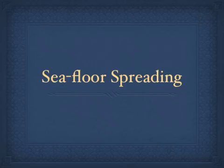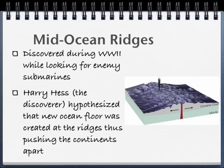Now we're going to change topics slightly to discuss seafloor spreading. During World War II, the United States Navy needed to locate enemy submarines hiding on the bottom of shallow seas. Because of this, large areas of the ocean floor were mapped for the first time. American naval officer Harry Hess did some of the mapping, and his work helped develop the theory of plate tectonics. Harry Hess hypothesized that new ocean floor was created at the ridges on the oceans, thus pushing the continents apart.